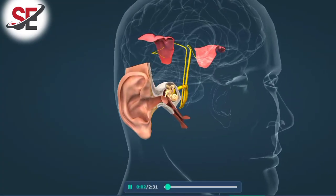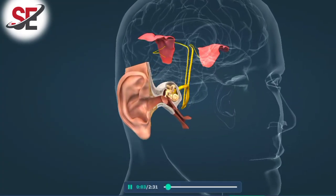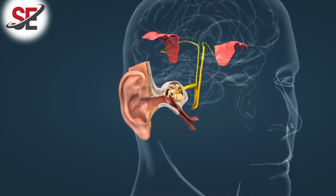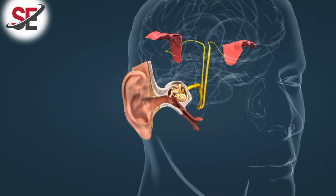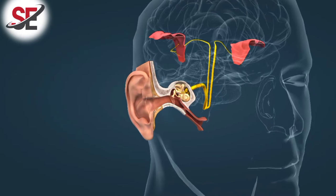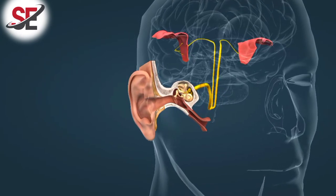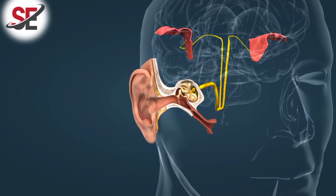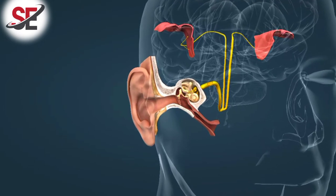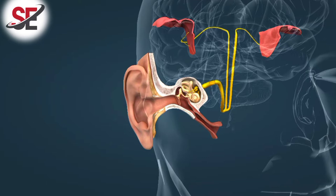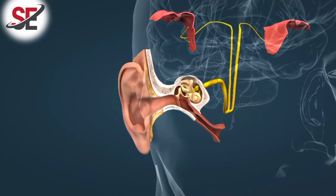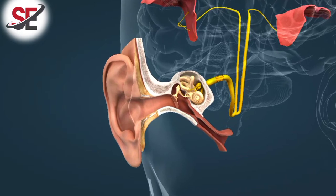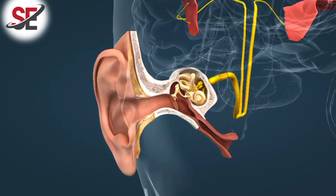Sound is the vibration of air perceived by our ears. Healthy ears can perceive sound waves of frequencies from about 20 to 20,000 Hertz. This range will become narrower due to aging or noise exposure. Sound waves create signals in the inner ear which are transmitted to the auditory cortex by the cochlear nerve and auditory pathway. The sense of sound is produced in the auditory cortex.